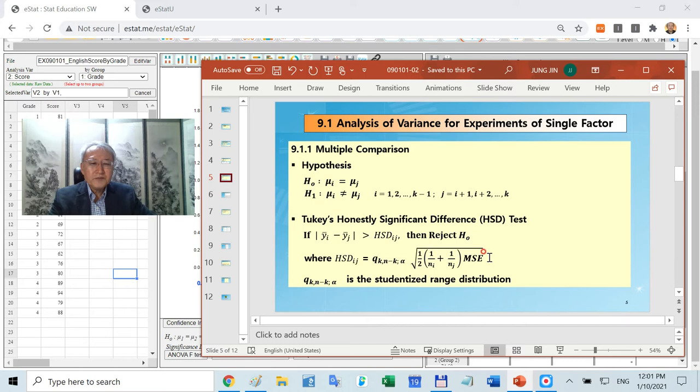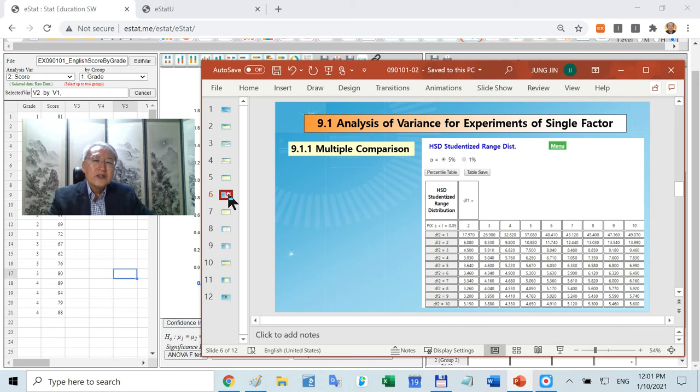We call this studentized range distribution. You can find it in E-STAT. In the menu, you can find the HSD studentized range distribution like this. This is the numerator degree of freedom, this is the denominator degree of freedom.